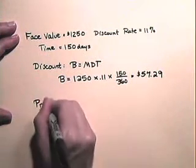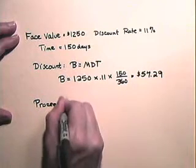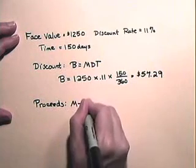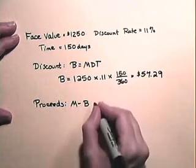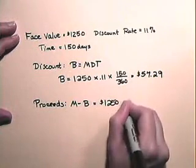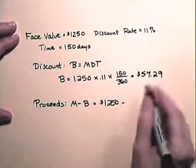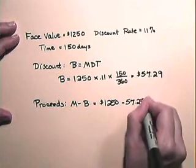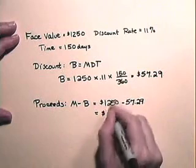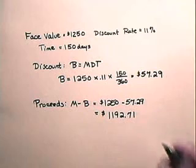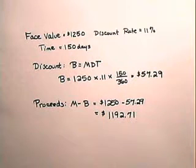And of course the proceeds is always equal to M minus B, which is the face value, $1,250, subtract the bank discount, $57.29, which gives us $1,192.71, which is the amount the borrower actually receives from this note.